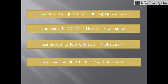Next command: send_event -e job_on_ice -j job_name. This command will not keep track of the job — date and time condition tracking will not be done if the job is kept on ice. The job is treated as a success and the dependent job will run.